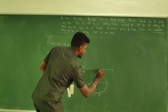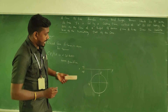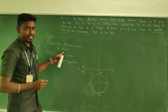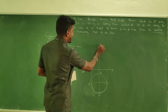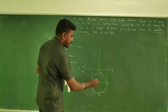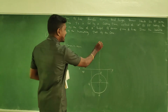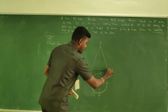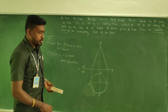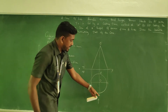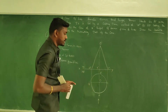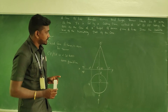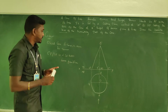For the front view, take projectors from each and every point from the base and intercept with the XY line. The axis height is 70 mm — raise it up 70 mm and mark the apex O in the top view and O' in the front view. Connect the apex with the base to form the triangular profile of the cone. When looking from the front, A', B', C' are visible; D is the invisible one — take it in brackets nearby B'.